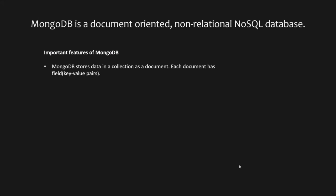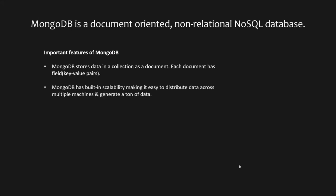MongoDB has built-in scalability, making it very easy to distribute data across multiple machines as your app gets more users and starts generating a ton of data. Another important feature is its great flexibility. Unlike relational databases, a collection in MongoDB is schema-less — you don't need to define a schema for your documents. Documents in the same collection can have different numbers of fields and different types of fields, and MongoDB will not complain about that. In the same collection, you can have documents with different schemas.